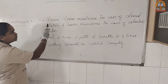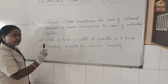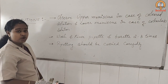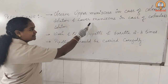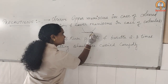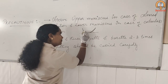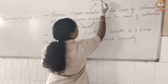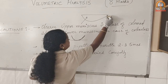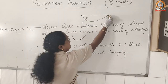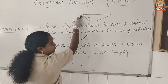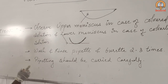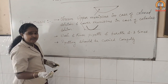Precautions: Observe the upper meniscus in the case of a colored solution — our colored solution was KMnO₄. Observe the lower meniscus in the case of a colorless solution — our colorless solution was Mohr's salt, so you observe the lower meniscus where the calibration is touched by the lowest point of the solution. Always rinse the burette and pipette two to three times as shown in the video. Pipetting should be done carefully because you have poured 5 mL of concentrated sulfuric acid into the Mohr's salt.